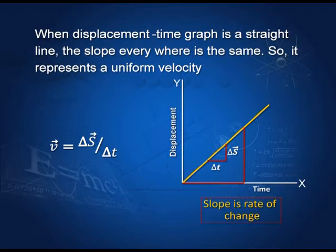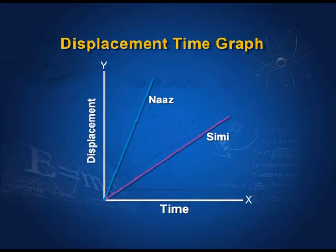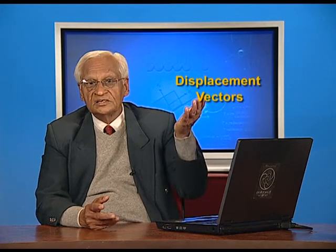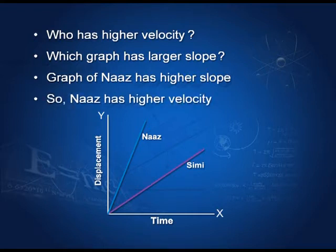We could have taken smaller delta S and delta t, and we shall see how this leads to instantaneous velocity. Now for your exercise, there are two friends, Nas and Simi, and these are their displacement graphs. Can you tell who among them is faster? Easy — find the slope. The slope of Nas's graph is larger than the slope of Simi's graph. Therefore, Nas has higher velocity because the rate of change along his graph is higher. Simply by looking at the graph, you can find out which one has larger velocity.